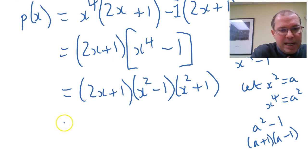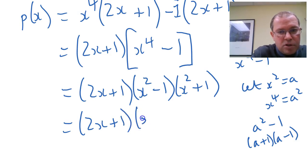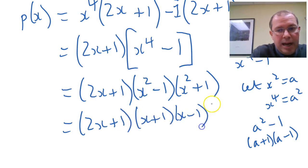Finally, we're nearly finished. And obviously, x squared minus 1 is a simple difference of two squares. So it's x plus 1, x minus 1. And x squared plus 1 does not factor.